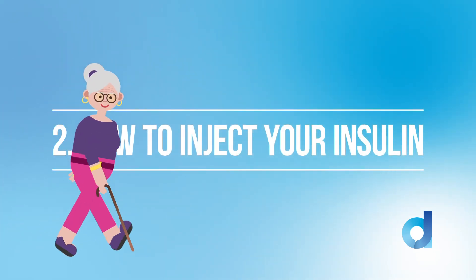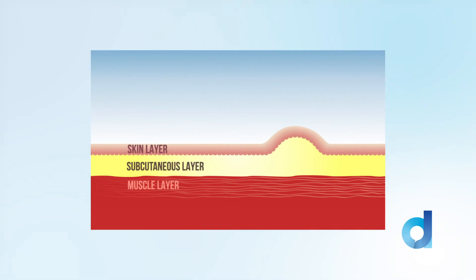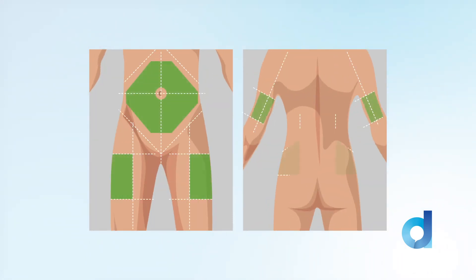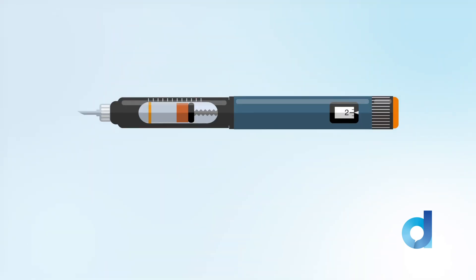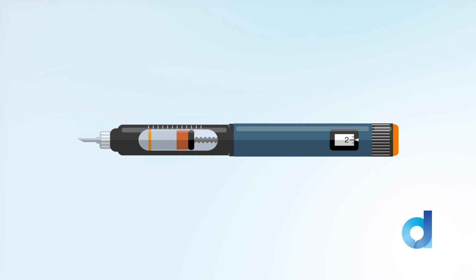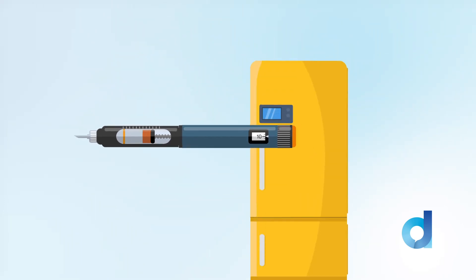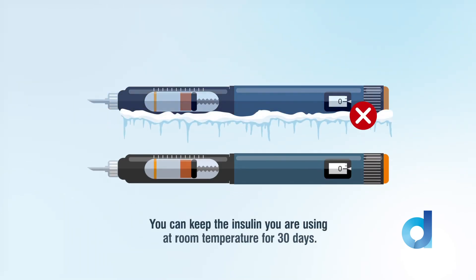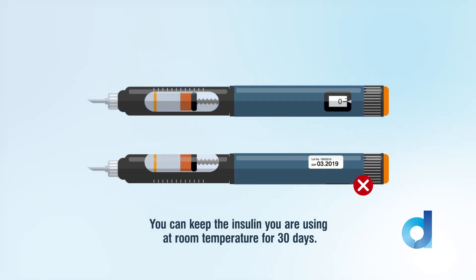Administering insulin: All insulins are given via subcutaneous injection. Avoid scars and stretch marks, avoid muscle, and rotate each site to avoid lumps. A pen device reduces the risk of dosing errors. Use a 4–6mm length pen needle to avoid going into muscle. Ensure insulin is stored correctly and is in date. Do not use an insulin if it is frozen or exposed to temperatures over 30 degrees Celsius, and never use an expired insulin.